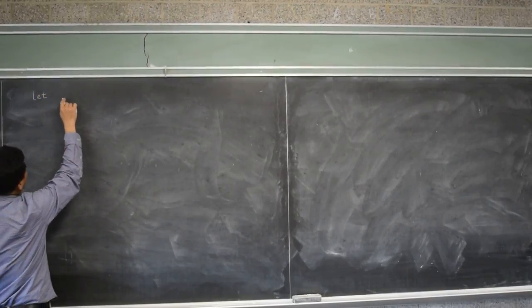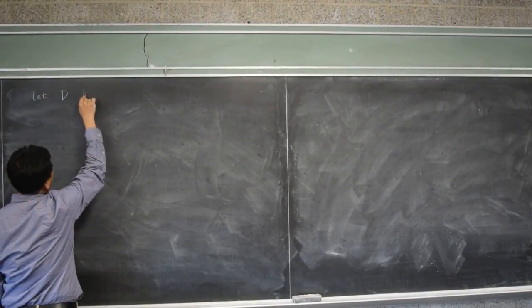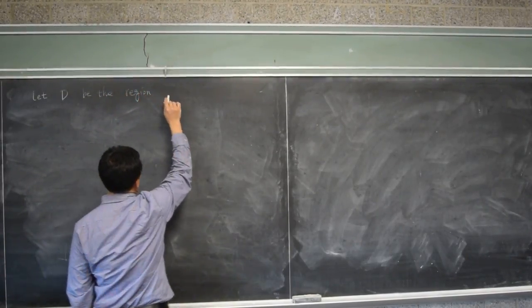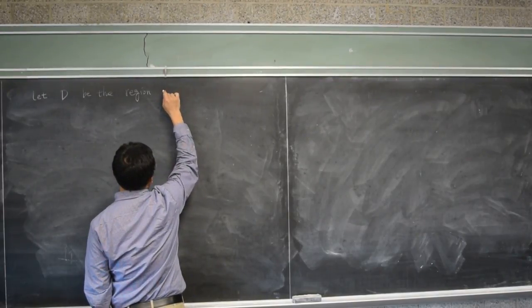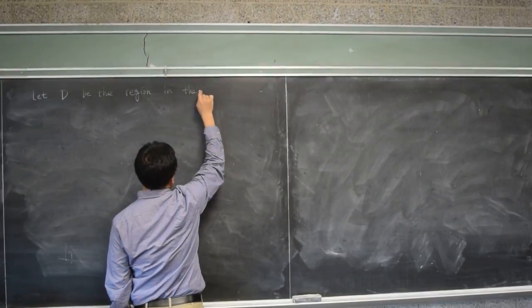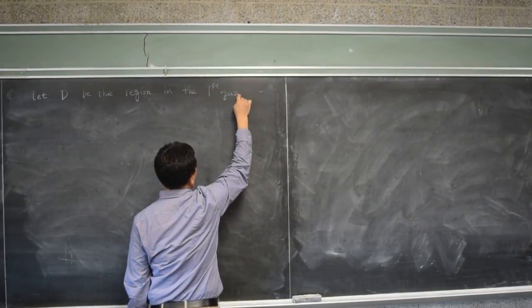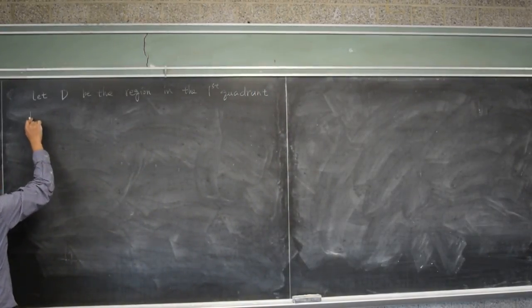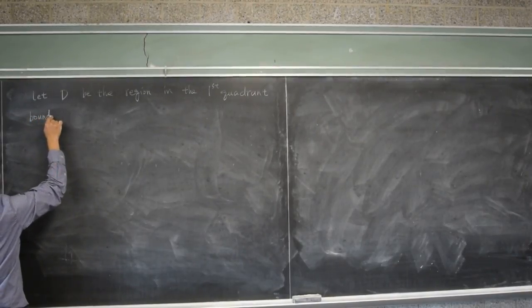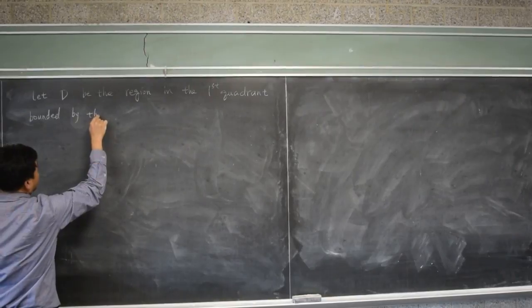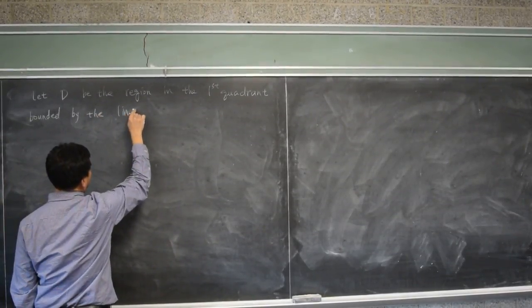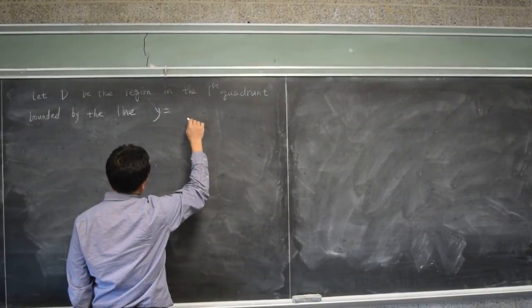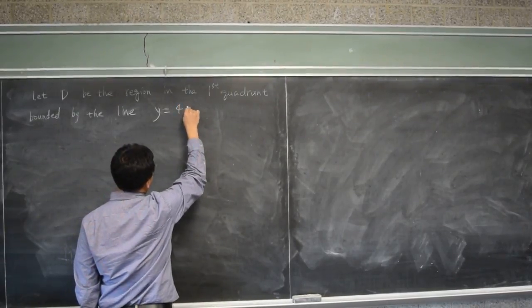Let D be the origin in the first quadrant bounded by the line y equals 4 minus 2x.